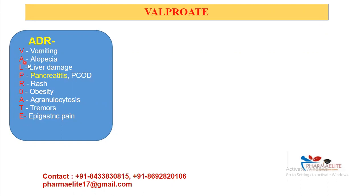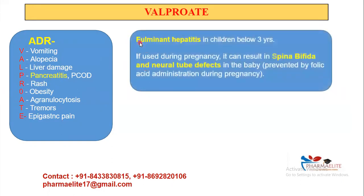For side effects, remember the mnemonic VALPROIC: Vomiting, Alopecia, Liver damage, Pancreatitis, Rash, Obesity, granulocytosis, tremors, and epigastric pain. At minimum remember alopecia, liver damage, and pancreatitis. Also importantly: fulminant hepatitis in children below three years — valproic acid cannot be given to children under three years because it causes fulminant hepatitis.